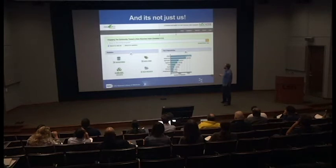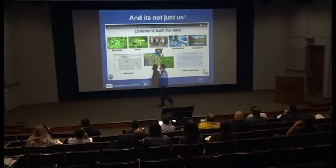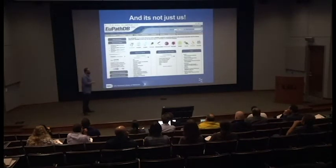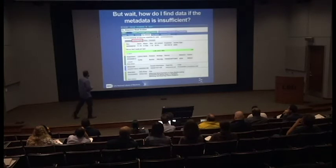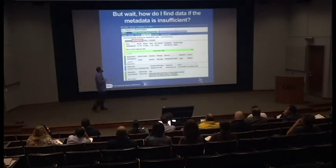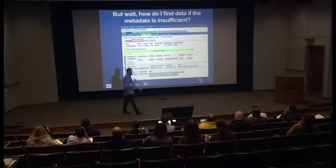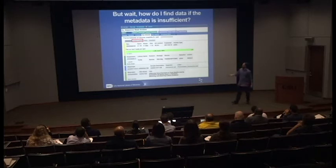It's not just us doing this integration. BioCADDI is a project trying to integrate a lot of data. Cyverse does this to some extent. UPathDB does a lot of that stuff — there was a fantastic talk about it yesterday. But remember, a lot of times the metadata is insufficient. SRA is huge — 4 million datasets. How do you go across it?